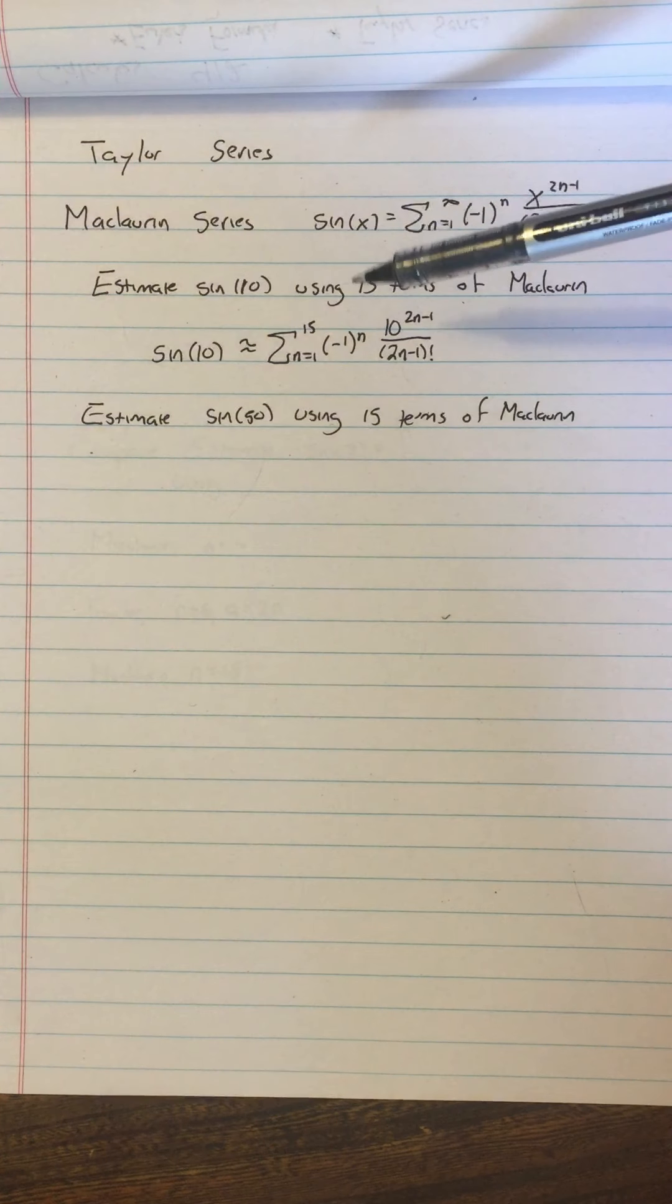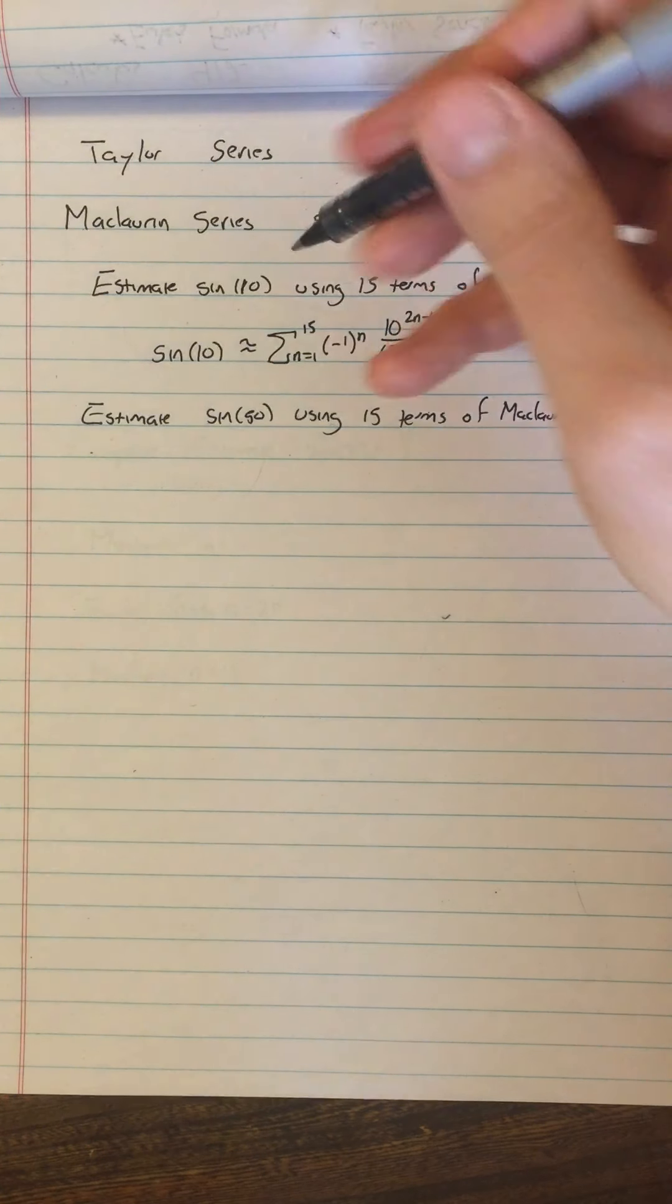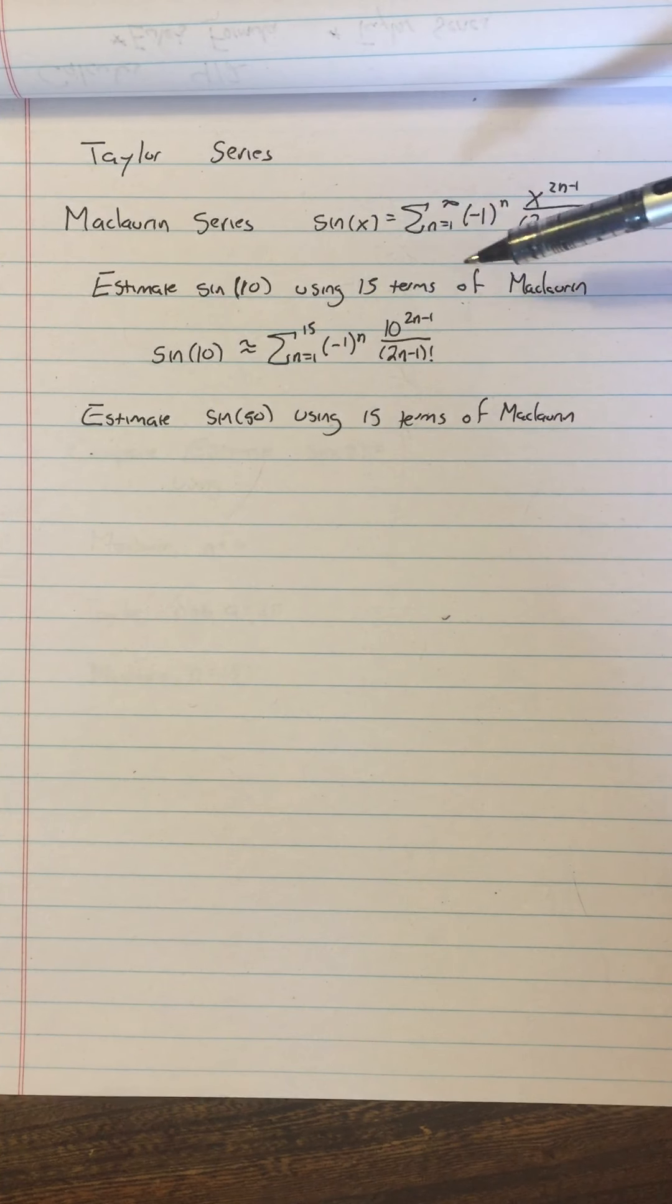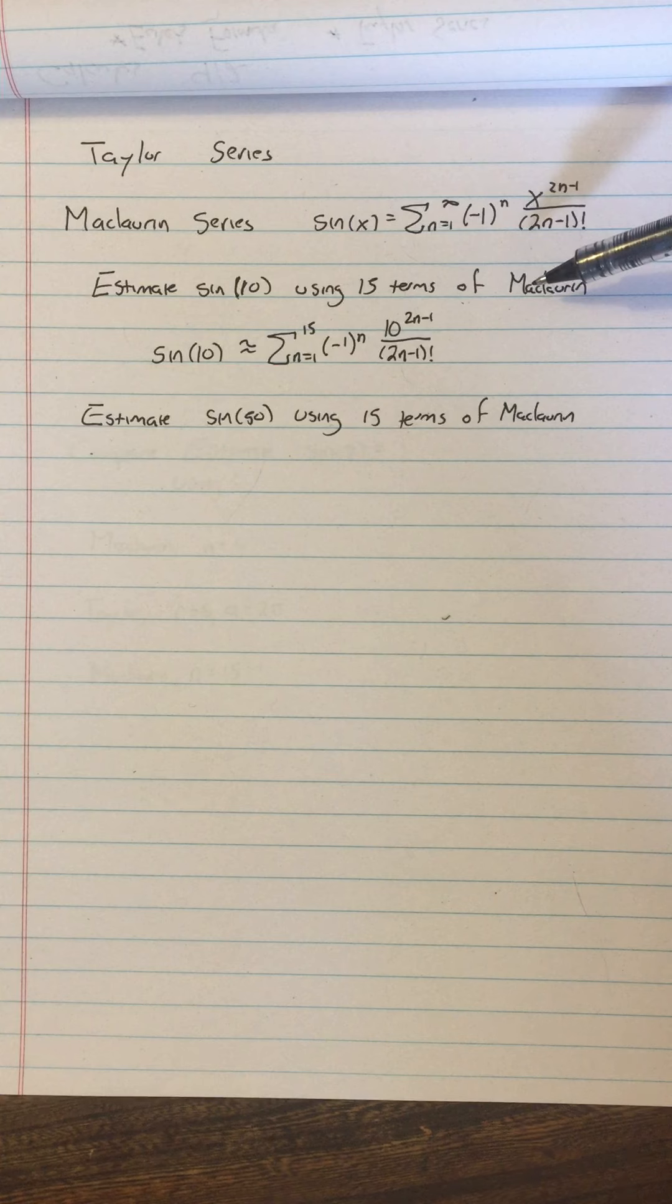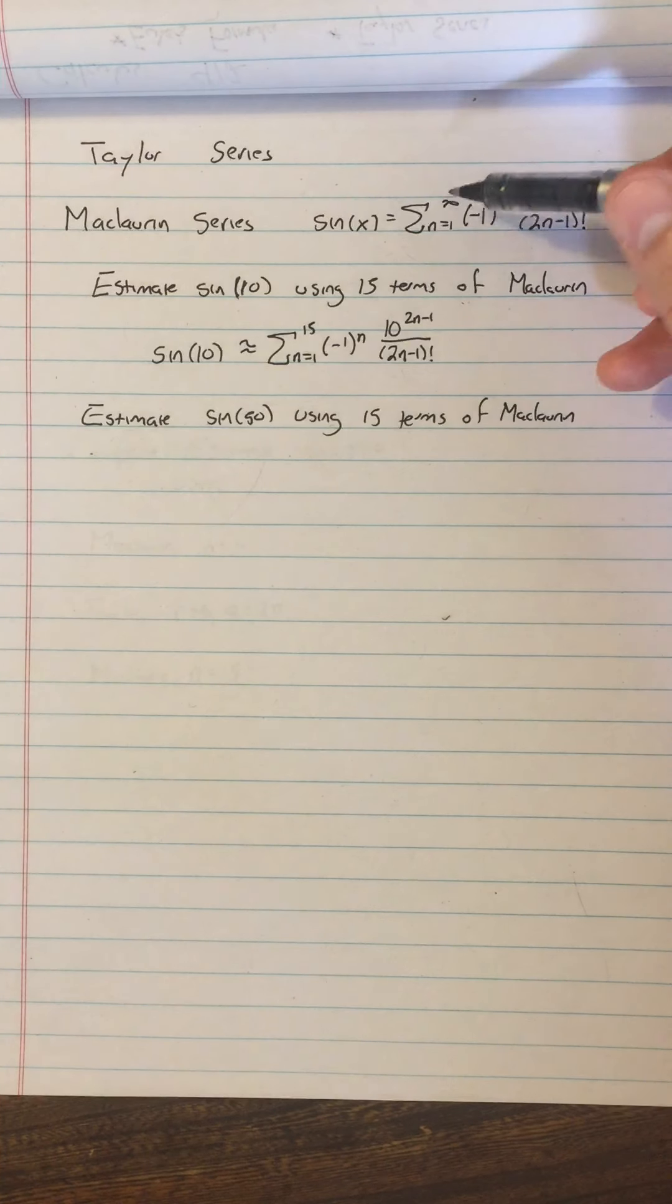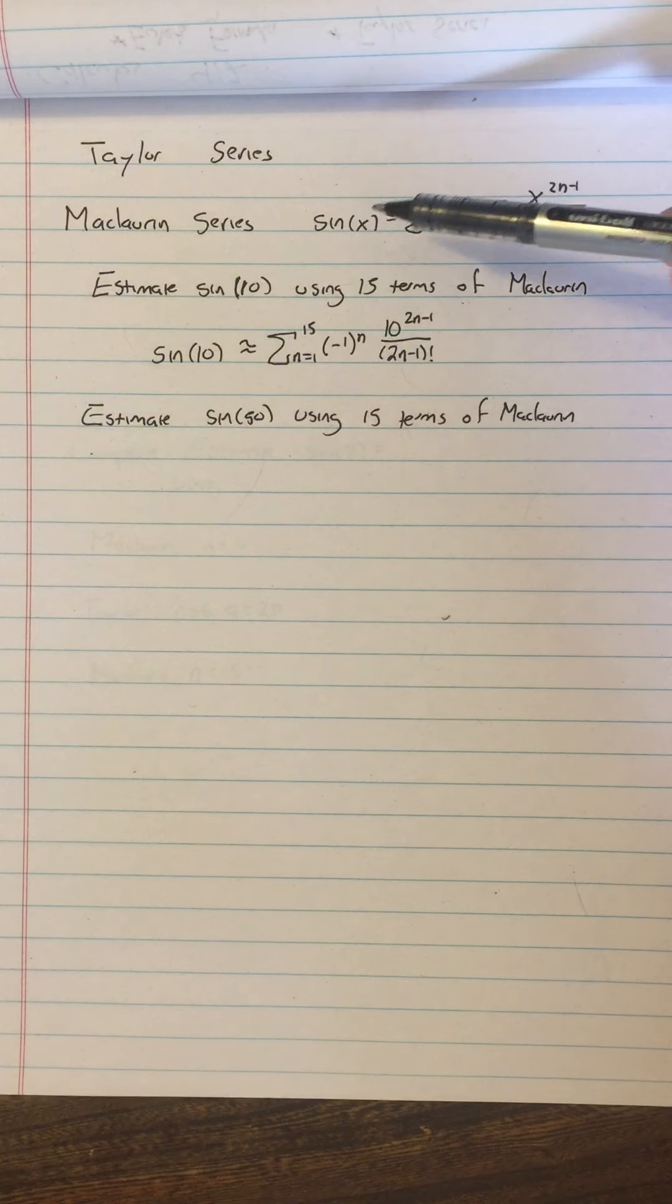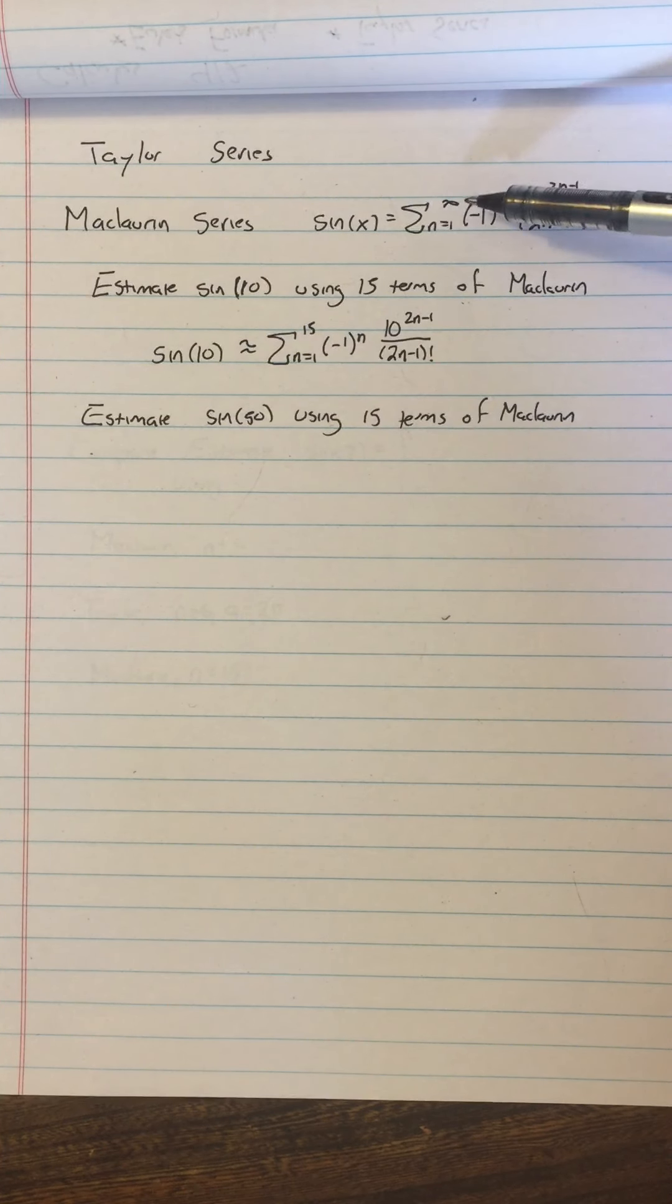So one thing that we did in a previous video was estimating the sine of 10 using 15 terms of the Maclaurin series. So what does that mean? It means we take this series up here, this Maclaurin series, and instead of n being infinity, here's the thing about the Maclaurin series. Sine of x is exactly equal to this polynomial, but only if you have infinitely many terms.